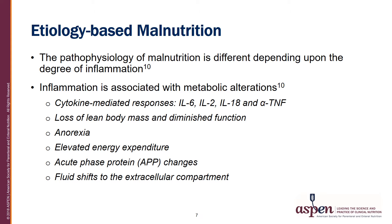The pathophysiology of malnutrition is different depending on the degree of inflammation. When patients suffer from significant inflammation, it is associated with metabolic alterations including cytokine-mediated responses with a rise in interleukin-6, interleukin-2, interleukin-18, and tumor necrosis factor. Inflammation is also associated with loss of lean body mass and diminished functional status, anorexia, elevated energy expenditure, acute phase protein changes, and fluid shifts to the extracellular compartment of the body.